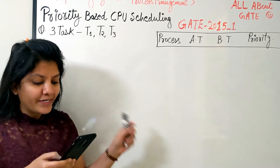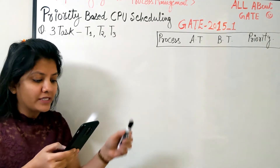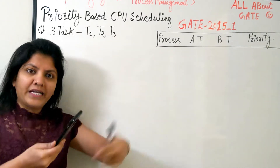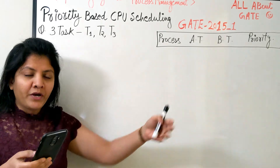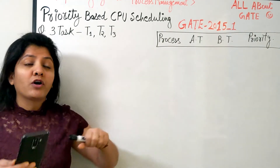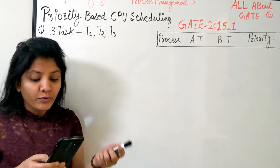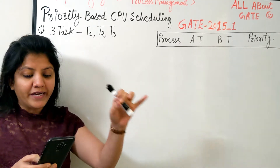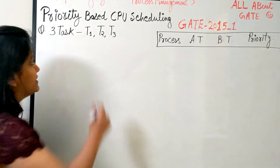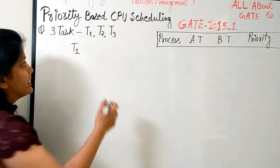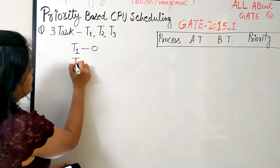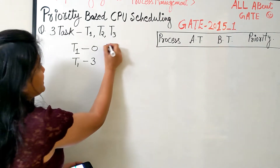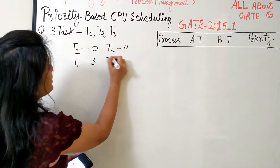The question says: consider a uniprocessor system executing three tasks T1, T2, T3, each composed of an infinite sequence of jobs. T1 is a task containing multiple jobs — you can consider it like a process with multiple threads. These jobs arrive periodically at intervals of 3, 7, and 20 milliseconds respectively. So if T1 comes at time zero, it comes again after 3ms; T2 comes again at time 7.